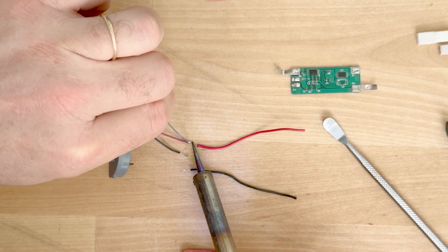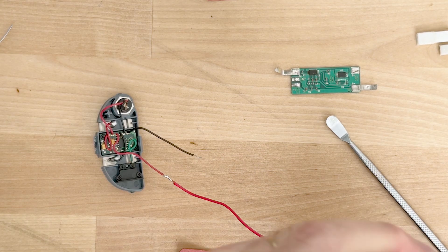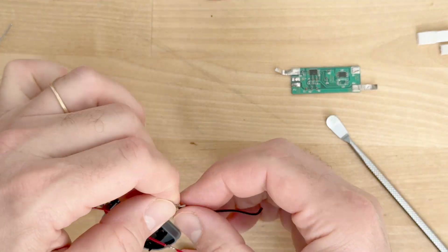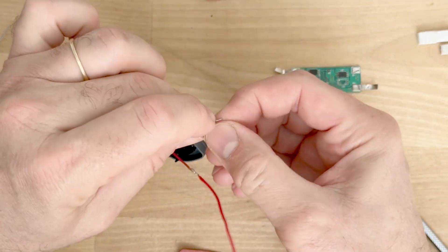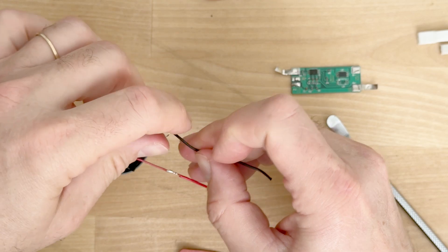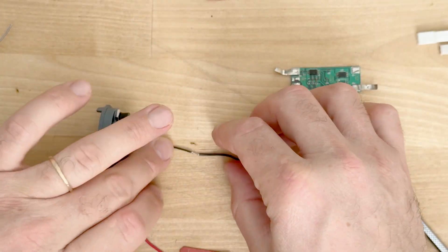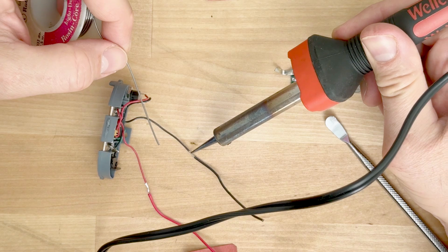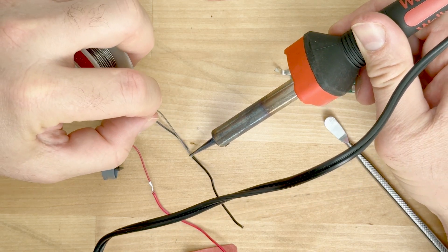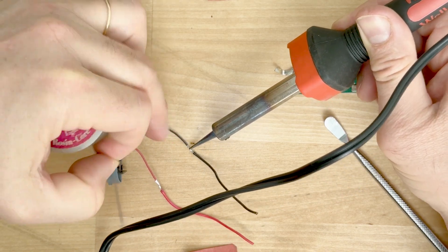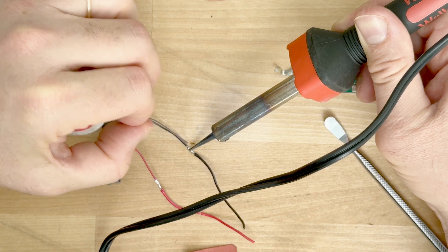And this is an easy solder job. You don't need much if you don't have much experience, do a little practicing before until you get comfortable. So you can see you're just soldering the new wires on to extend things and we'll put some heat shrink on.